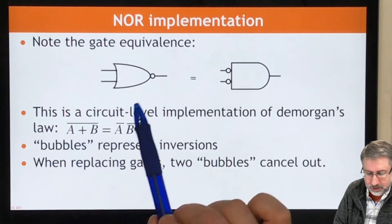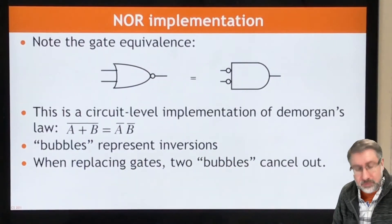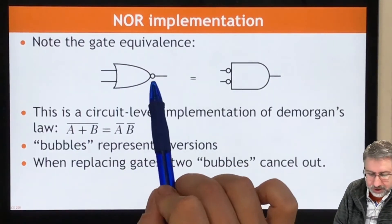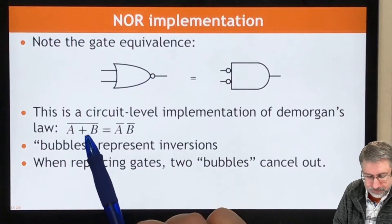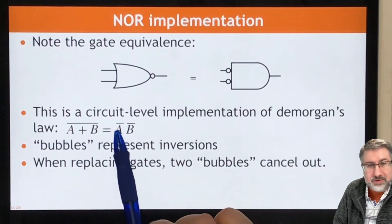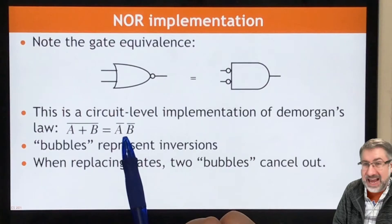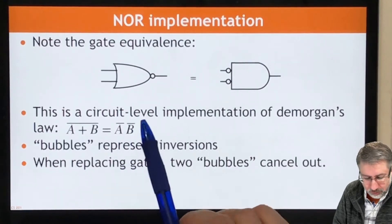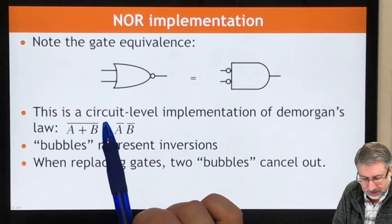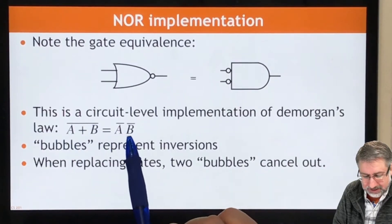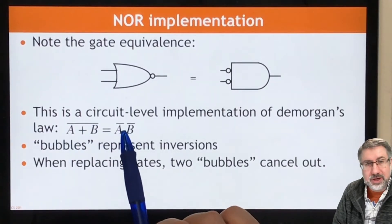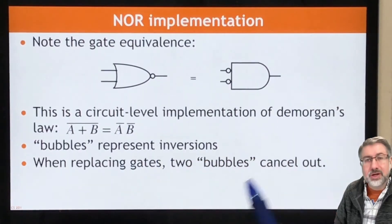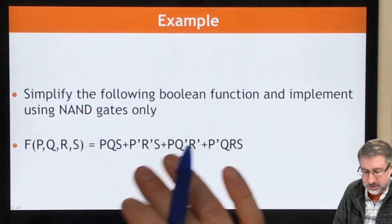A NOR gate can be drawn in two different ways. I can either invert the output of an OR gate, or De Morgan says equivalently I can invert the inputs of an AND gate — it's the same function. De Morgan says inverting an OR is the same as inverting the inputs of an AND, and the bubbles on the circuit gates represent those inversions.